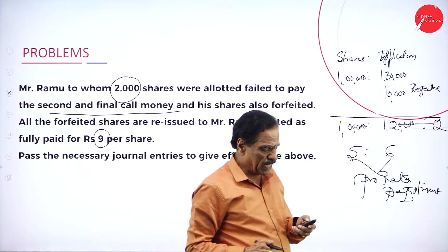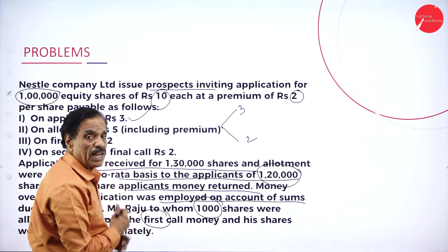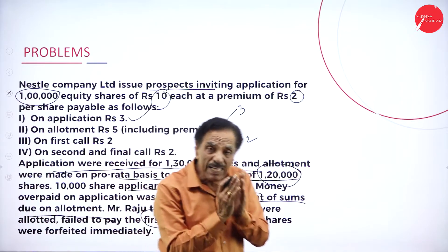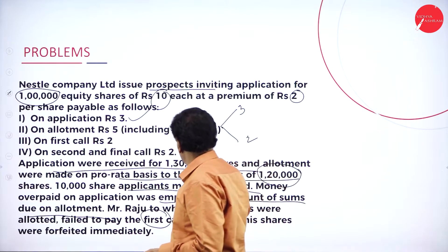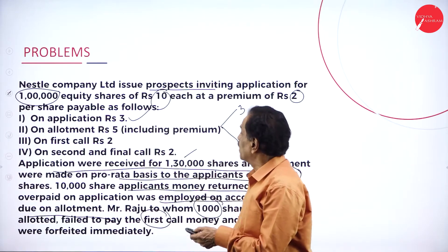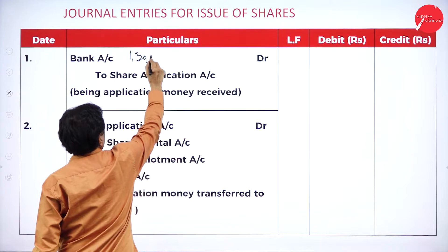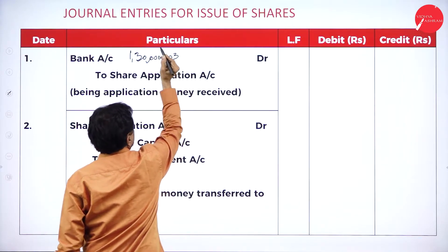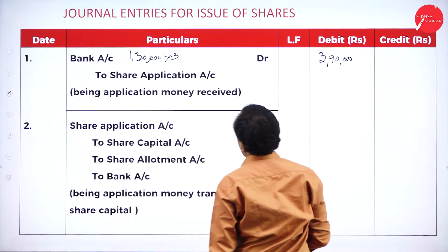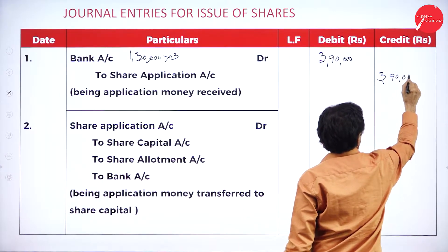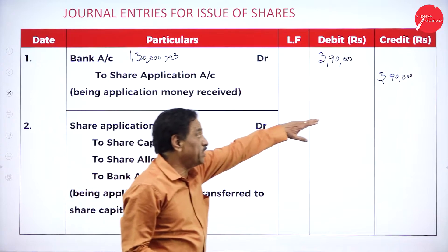We will now go with the journal entries. How many shares are there? 1 lakh. Application fee? Rupees 3. Applications received? 1,30,000. Entry: bank account debit to share application account — 1,30,000 into 3 equals 3,90,000. Bank account debit to share application account: 3,90,000.